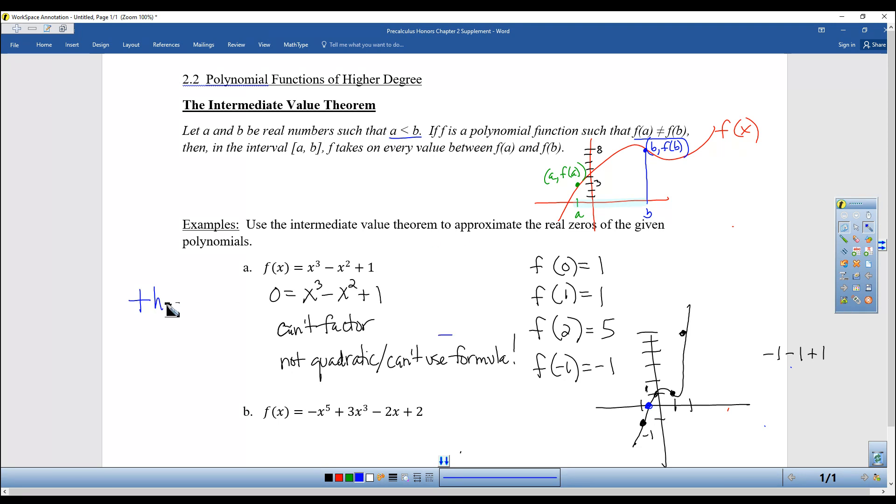It says to approximate the real 0s, there is a 0 between x is equal to negative 1 and x is equal to 0. Because the y value, because f of negative 1 is negative 1, and f of 0 is 1. So see how it goes from a negative to a positive? So there must be a 0 in between there.